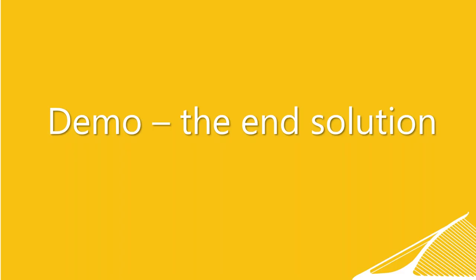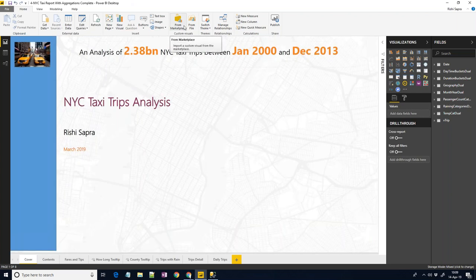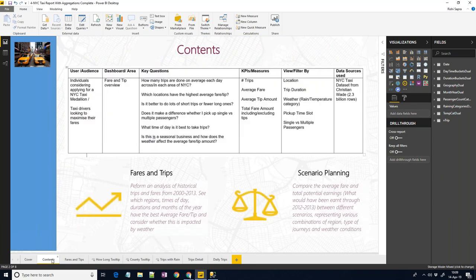Let me show you what the solution looks like. This is the Power BI report — I started with a cover page showing 2.38 billion trips between January 2000 and December 2013. On the content page there's a scoping template looking at who the audience is and what key questions they want. This drives how we design our data models: by understanding the questions we want to answer, we know what dimensions and measures we need.